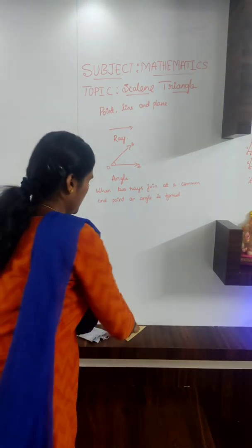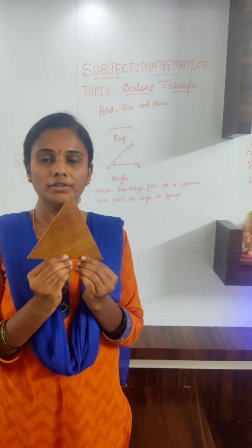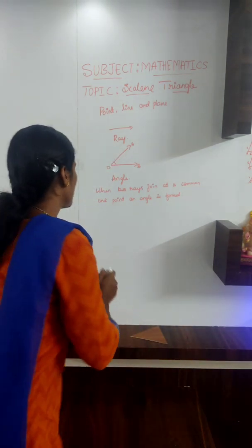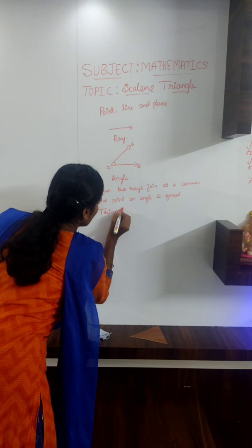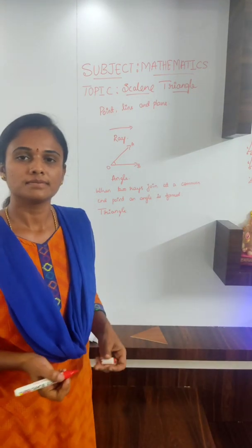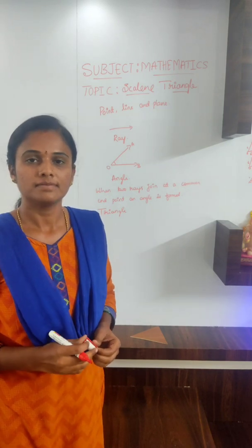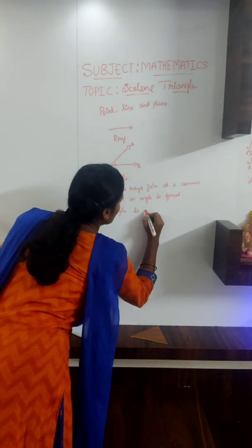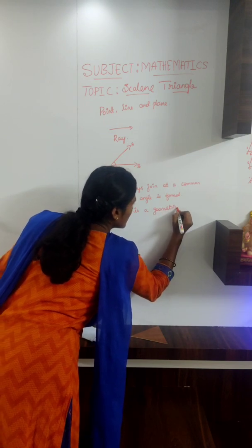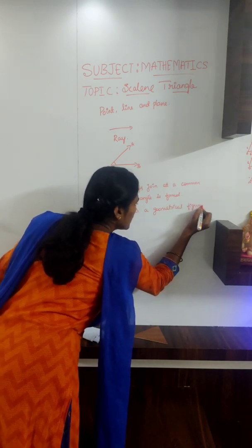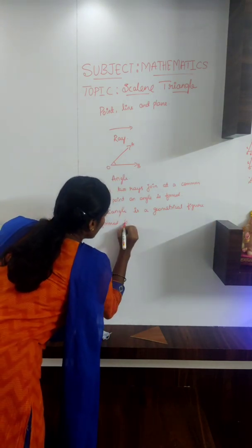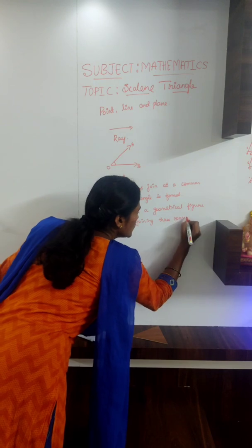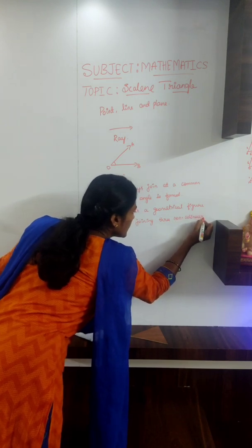Right. Now, tell me what do you call this? Triangle. Very good. This is a triangle. What is a triangle? Triangle is a geometrical figure formed by joining three non-collinear points. Very good.